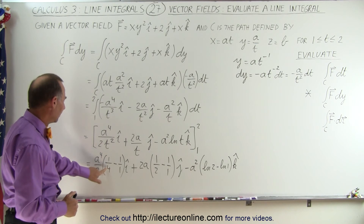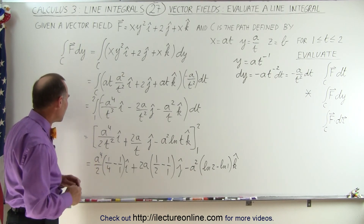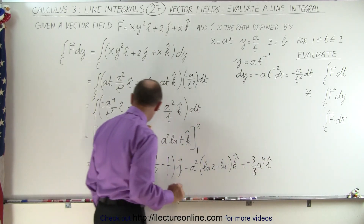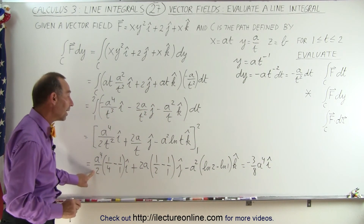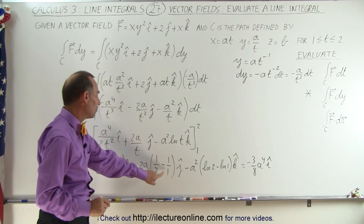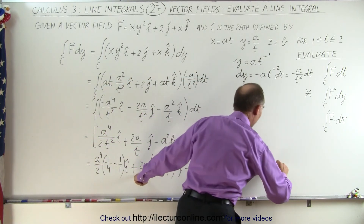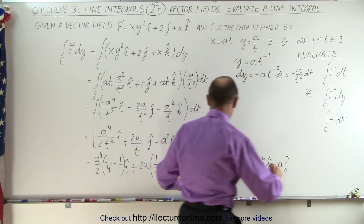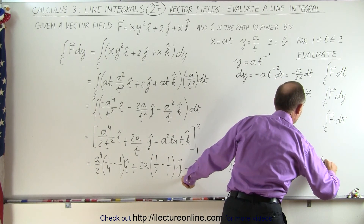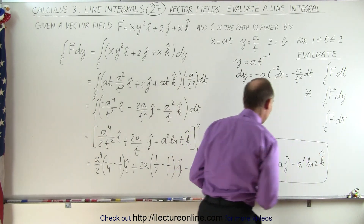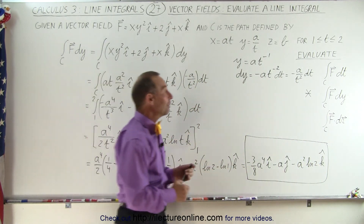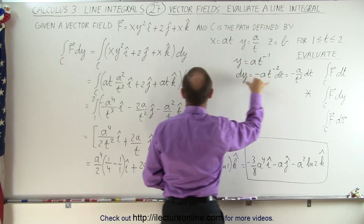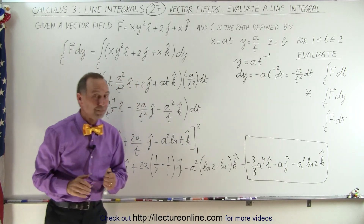Simplifying: for the i term, 1 over 4 minus 1 is minus 3 quarters, times a to the fourth over 2 gives minus 3a to the fourth over 8 in the i direction. For the j term, 1 half minus 1 is minus 1 half, times 2a gives minus a in the j direction. Finally, the natural log of 1 is 0, so the k term becomes minus a squared times the natural log of 2. This is the final evaluation of that integral. The only difference from the previous video is that instead of dt we had dy, so we differentiated y and substituted that expression in place of dy before evaluating.